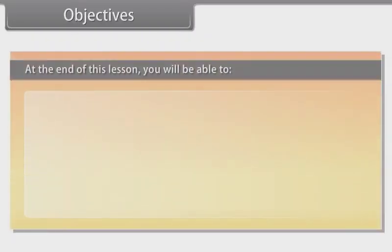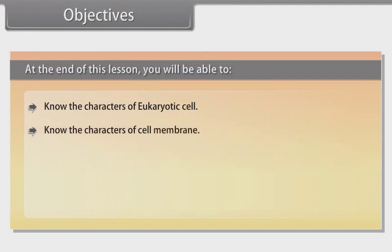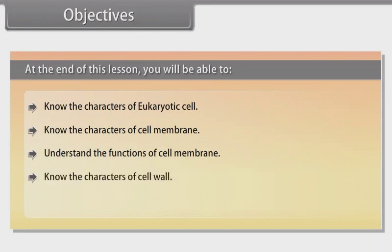Objectives: At the end of this lesson, you will be able to know the characters of eukaryotic cell, know the characters of cell membrane, understand the functions of cell membrane, know the characters of cell wall, and understand the functions of cell wall.